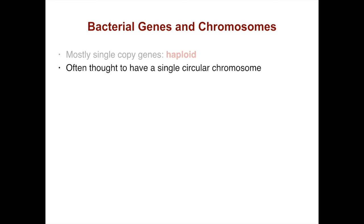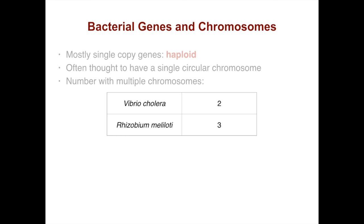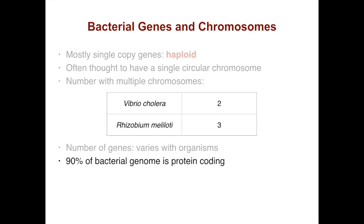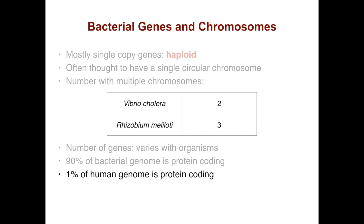Bacteria are mostly haploid. They usually have a single circular chromosome, but there are a number that have multiple chromosomes, such as Vibrio cholerae and Rhizobium meliloti, which has three. The number of genes varies between different bacteria, but one consistent feature is that a large percentage of the bacterial genome is protein-coding — usually around 90 percent. This is in sharp contrast to eukaryotes like humans, where only one percent of the human genome is protein-coding, suggesting that the bacterial genome has less complex regulation of its genes.